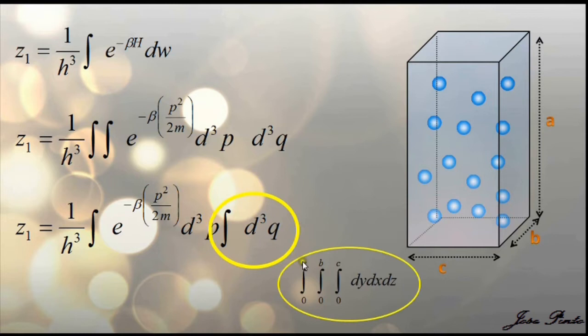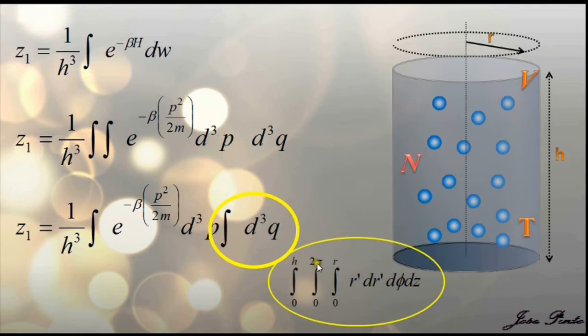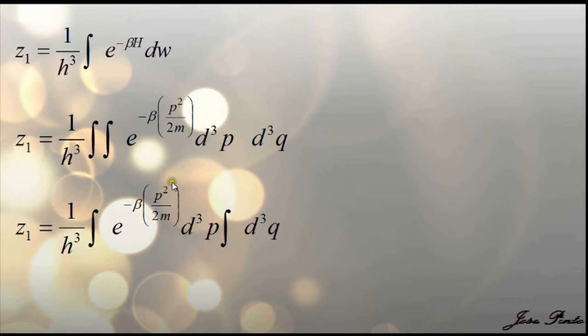For example, if it's a rectangular box, then it makes sense to use Cartesian coordinates. And if it's a cylindrical one, then cylindrical coordinates must be used. But notice here that my coordinates q do not appear in the Hamiltonian. So this integral here is just the volume.